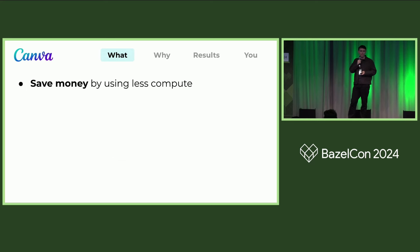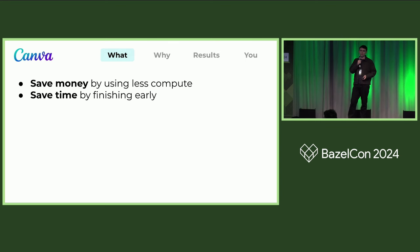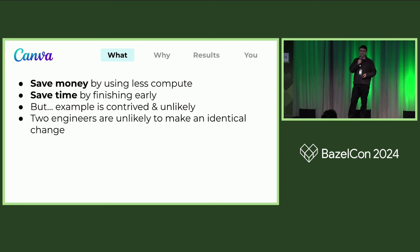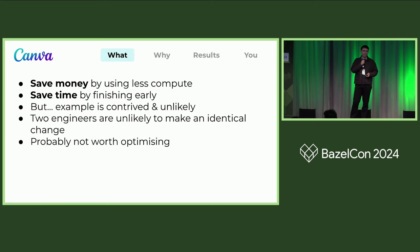If you do this, you save money because you're using less compute. You save time for that second developer because, by the time they've sent their execution request, it's already seconds or minutes into the execution of the first action. But this example is completely contrived and not particularly likely — it's not going to be super common that two engineers arrive at the same change at the same time. So what is this actually useful for?